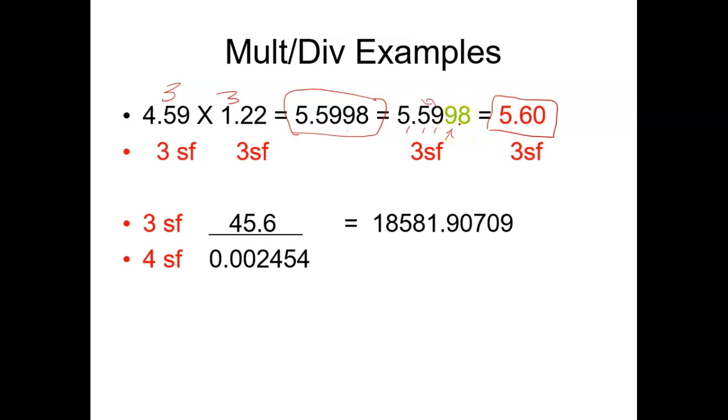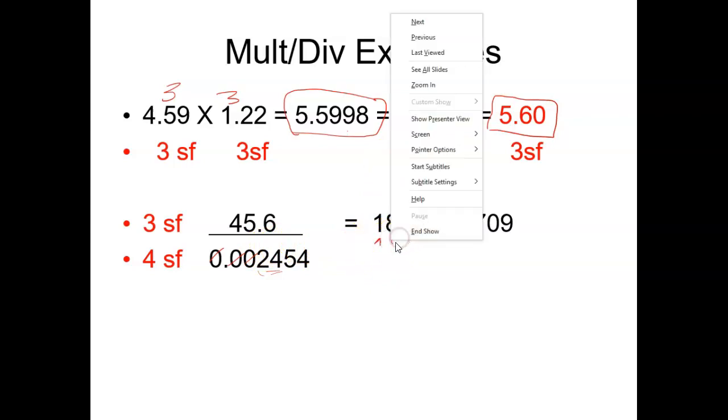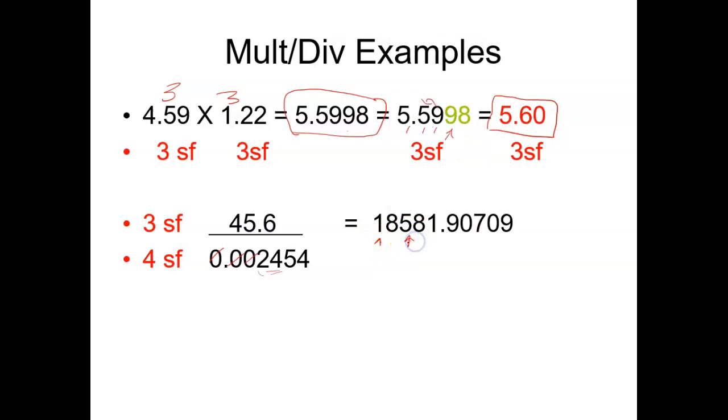Okay, and here is a division. You have three significant digits here, four here. Remember, these zeros don't count, so we have four and three. So our final answer is going to be in three significant digits, so you have one, two, and three.